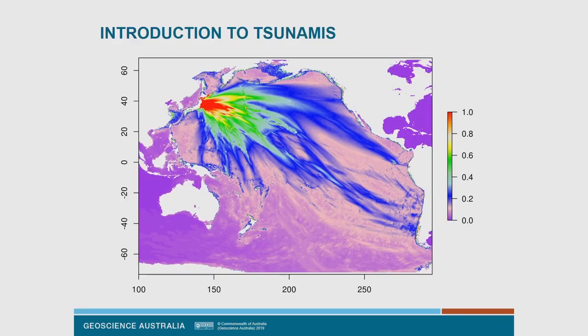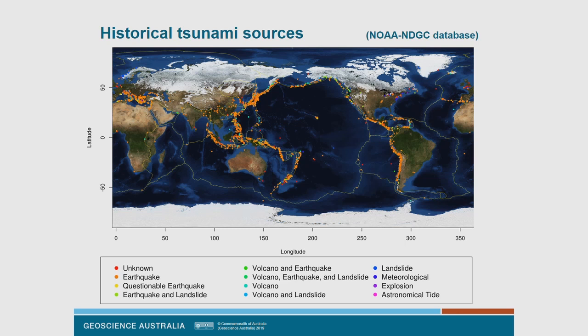I'll give you enough background to follow the talk. The 2018 Australian probabilistic tsunami hazard assessment is a study we released last year trying to quantify tsunami hazards around Australia. I'll talk about what it provides, how we create these products, the testing we perform, the results, and how you can access those results if you're doing tsunami hazard studies.